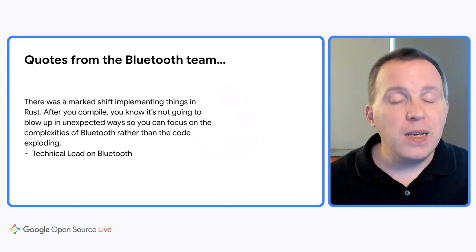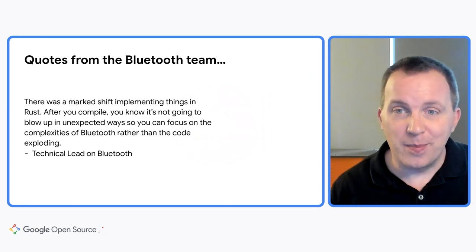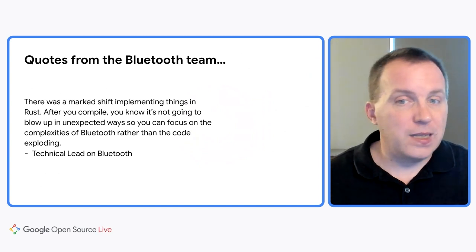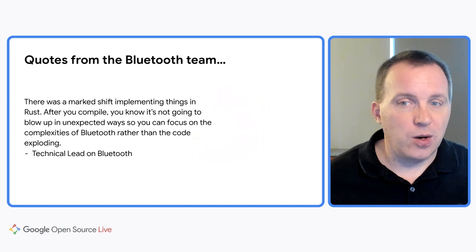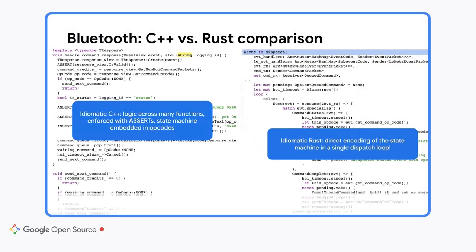Bluetooth is really complicated. There are many specifications, not all of which are perfectly implemented by devices. And even if they were, devices can come and go at unpredictable times, leading to some really deep complexity that you have to capture in the code. The code on the left is the existing C++ code for the previous version of the Bluetooth stack. It's highly asynchronous, handling many hardware events, timeouts, and software commands — a big pile of functions littered with asserts, state machines embedded in opcodes, and a bunch of unit tests. Understanding all of the interactions and the various machinery involves reasoning about that entire system in order to make any change.